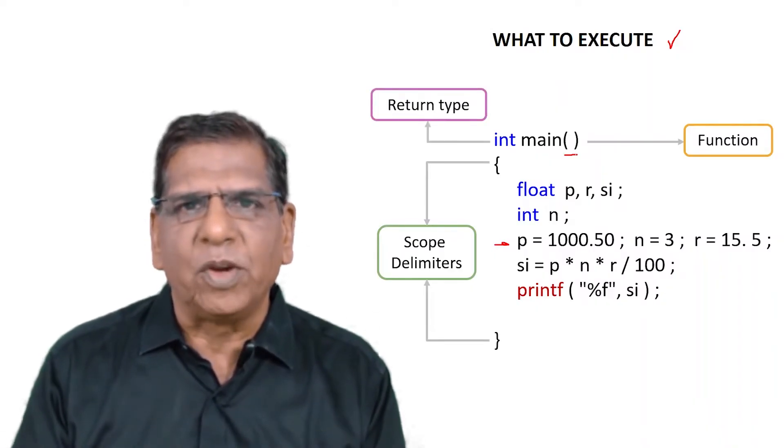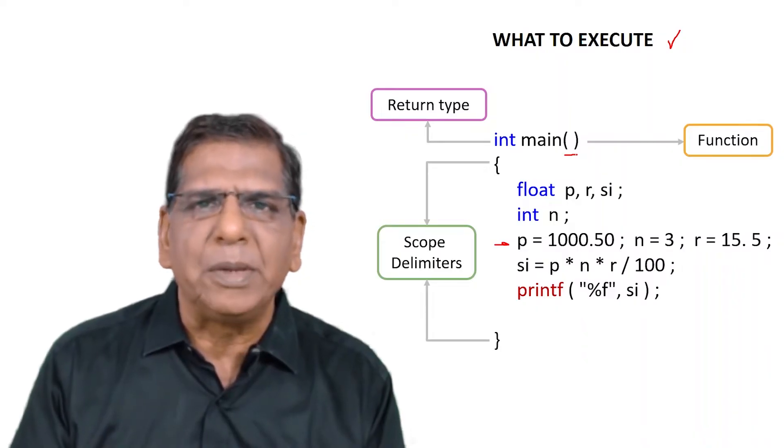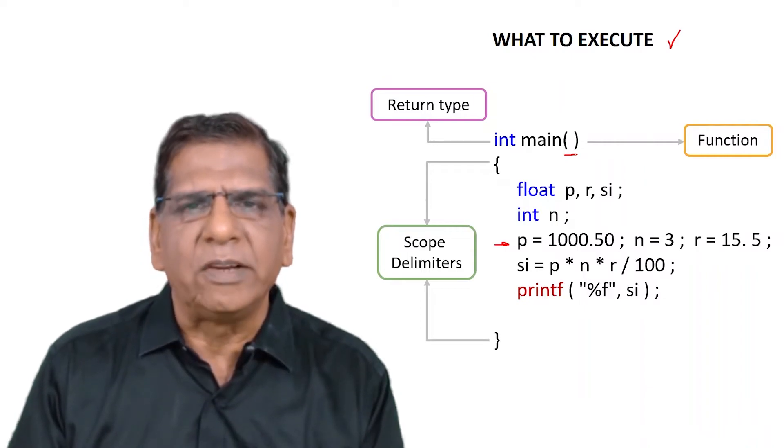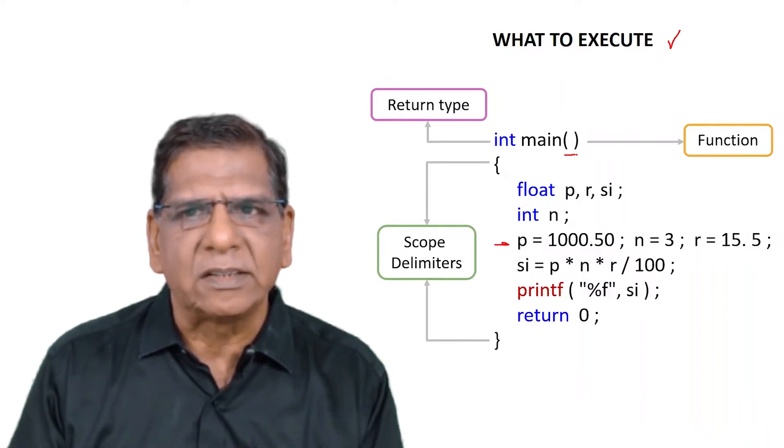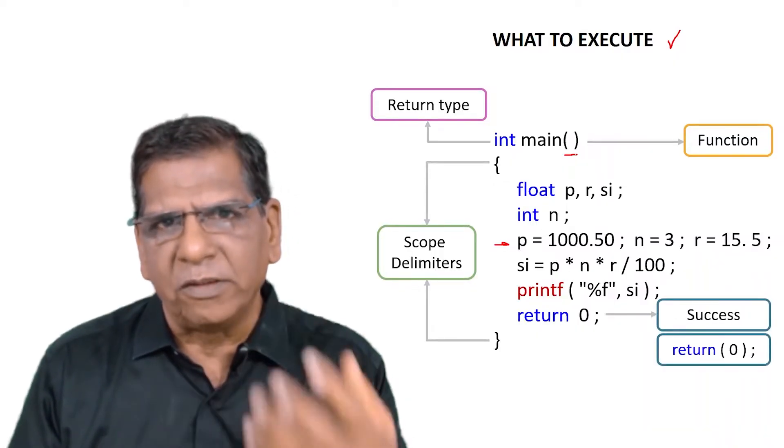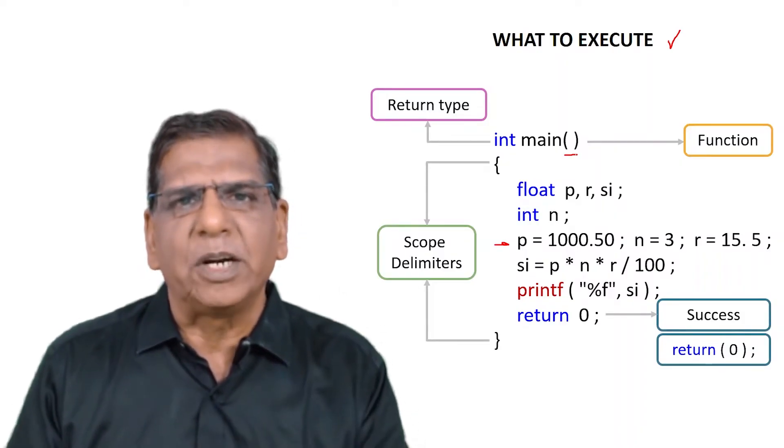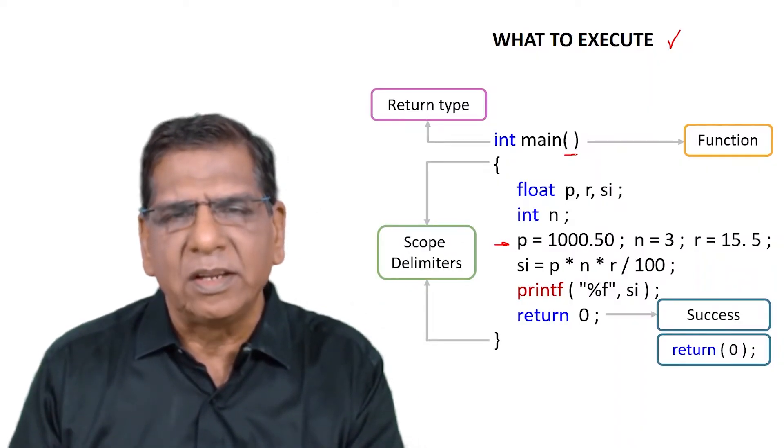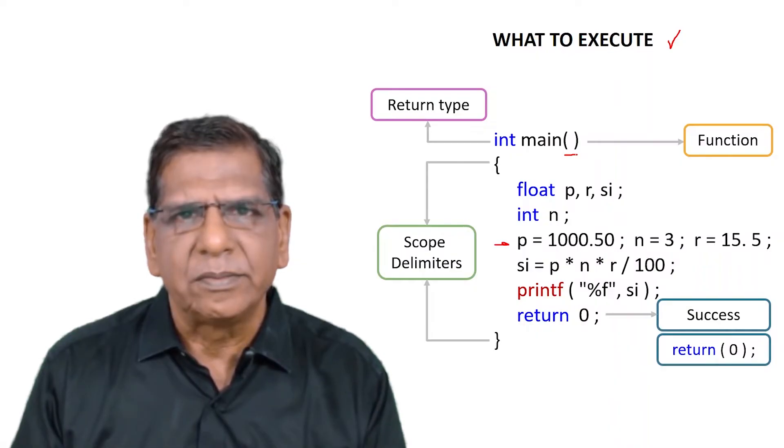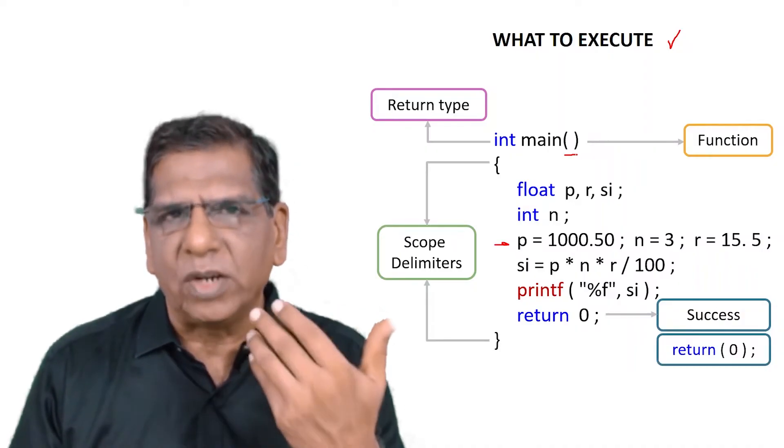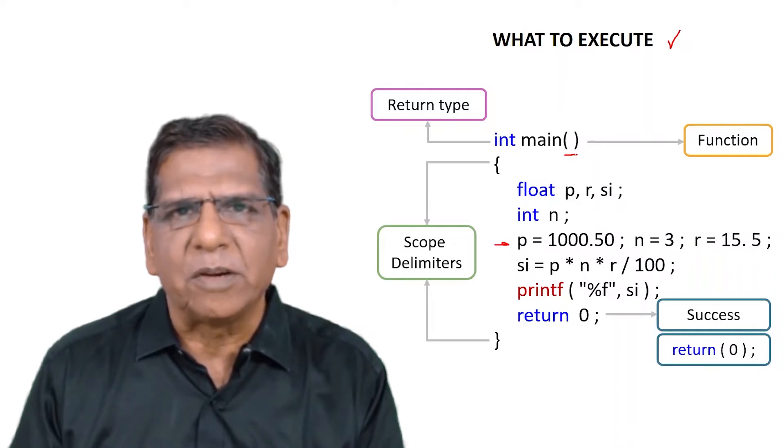Then preceding main, if you observe carefully, we also said int. That int indicates what type of value the function main is going to return. And the convention is that at the end of main you always return a zero indicating success. Zero in C programming would always mean success. Non-zero value would mean failure. Since every statement above return zero has been executed successfully, we are saying return zero at the end. Also realize that that zero can be written within a pair of parenthesis, or if you so desire you can drop the pair of parenthesis. In that sense, pair of parenthesis is really optional. Your choice whether we use it or not.